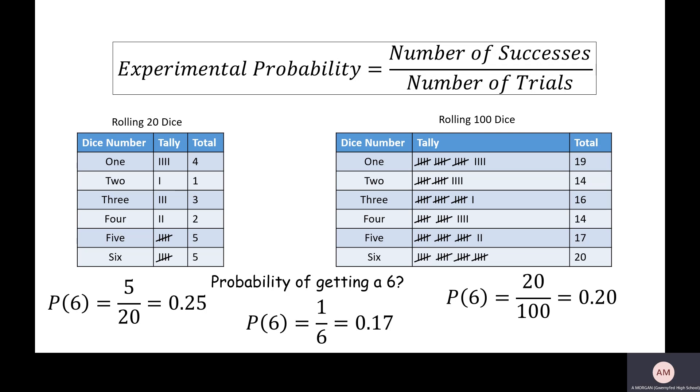So the things I want you to take away from this lesson are that this is the formula for experimental probability and how it works, and that the more times you do something the more accurate your results will be.